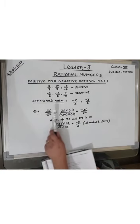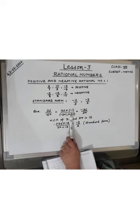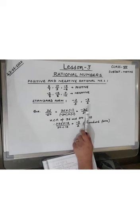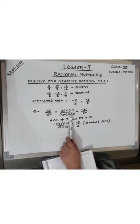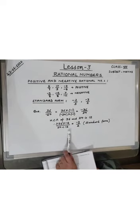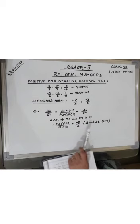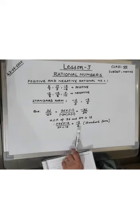Suppose you are given 36 upon minus 24 and need to convert it to standard form. First, remove the minus sign from the denominator by multiplying both numerator and denominator by minus 1: 36 becomes minus 36 and minus 24 becomes 24. Then find the HCF of 36 and 24, which is 12. Dividing minus 36 and 24 each by 12 gives minus 3 upon 2 — the standard form. The denominator is positive and 3 and 2 have no common factor other than 1.